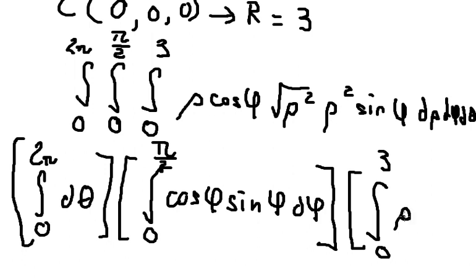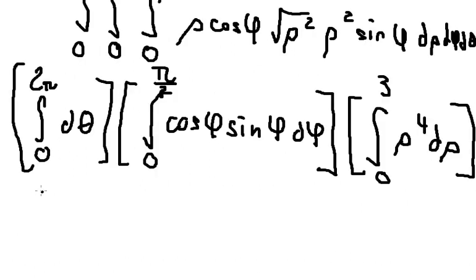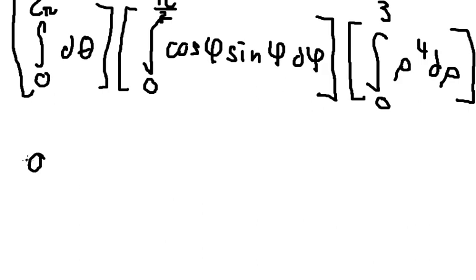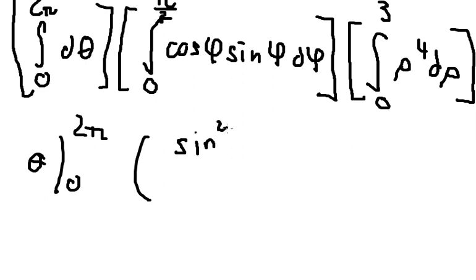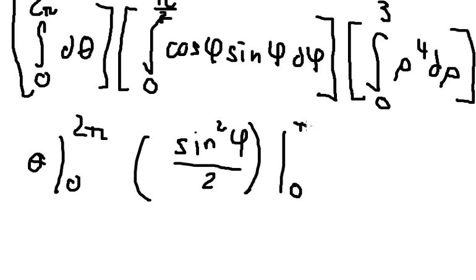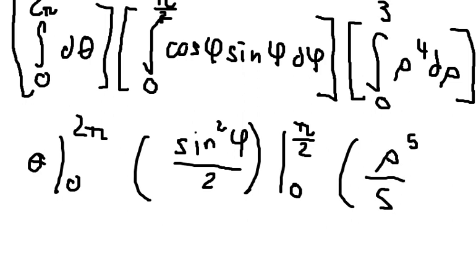After simplifying the integrand we have rho to the power of 4. We integrate with respect to theta first over 0 to 2pi, then handle the sin(phi) term giving sin²(phi) over 2, and integrate rho to get rho to the power of 5 over 5, evaluated from 0 to 3.